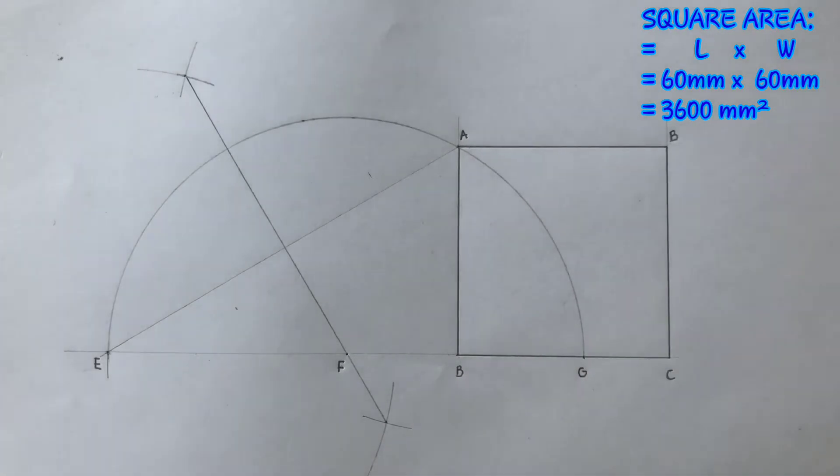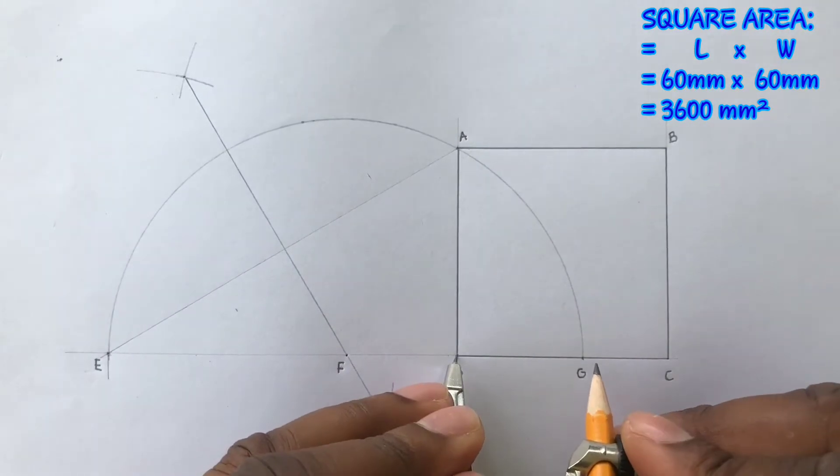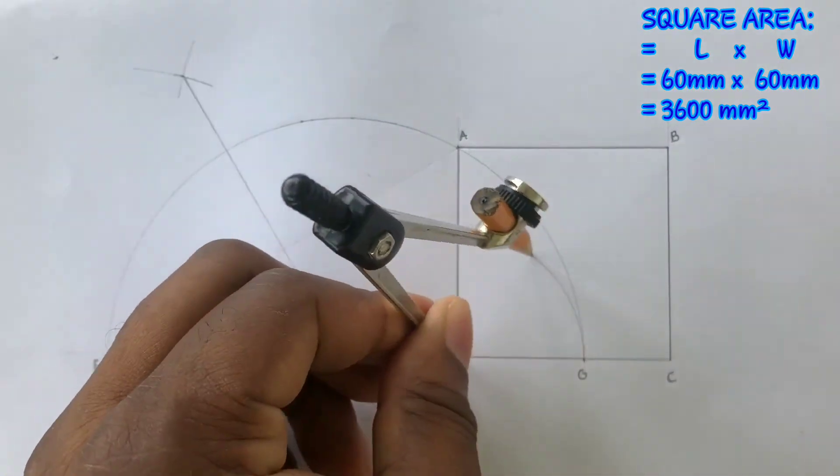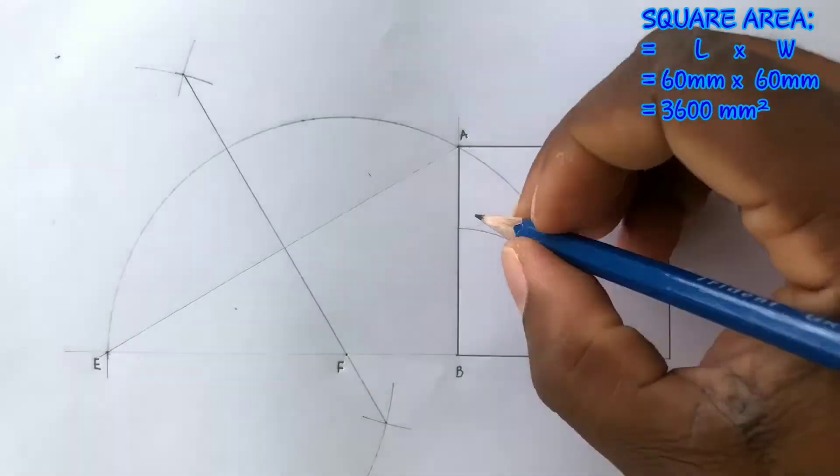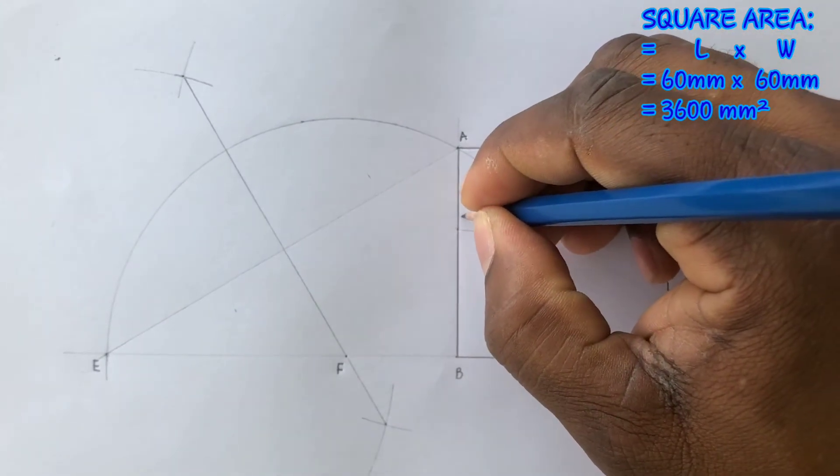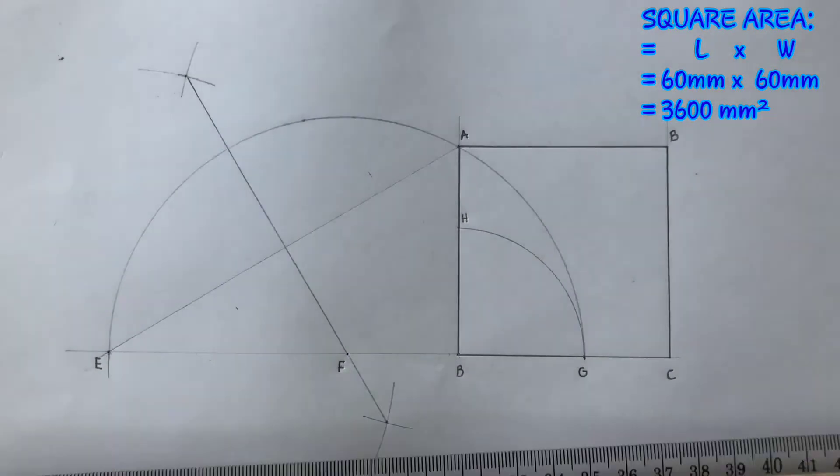Now open your compass from B to G and using B as the center scribe an arc to touch the AB line. This intersection of the AB line will give us point H. Label point H.